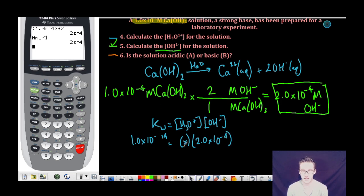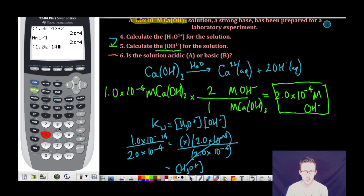Again, some quick algebra here. Divide each side by 2.0 times 10 to the negative 4, which means that my hydronium ion concentration is going to equal 5.0 times 10 to the negative 11.